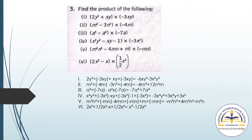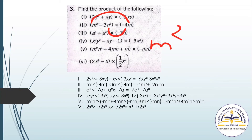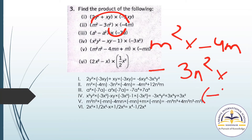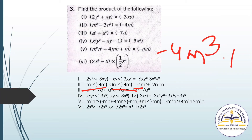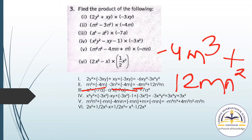Question number 2 of Q3: (m² minus 3n²) multiplied by (minus 4m). Distribute: m² times (minus 4m) minus 3n² times (minus 4m). For the first: minus 4 stays, m² times m gives m³, so minus 4m³. For the second: minus times minus gives plus, 3 times 4 is 12, so plus 12mn². The answer is minus 4m³ plus 12mn².